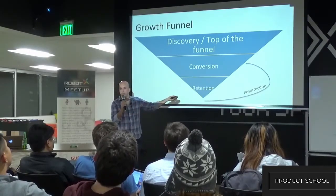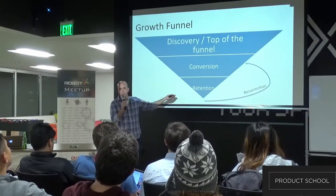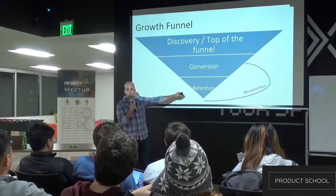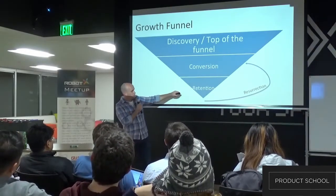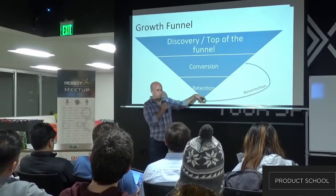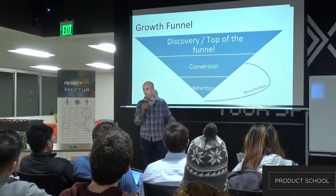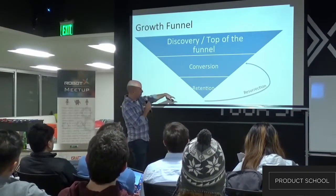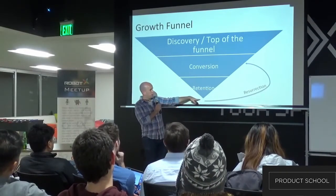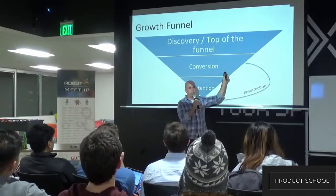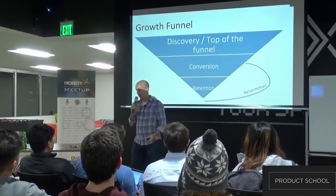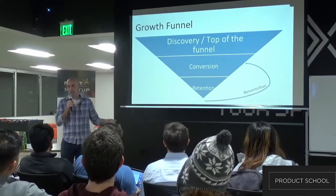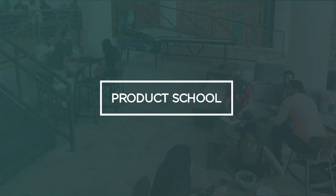And then you have retention, which means you need to keep the users using the product. Those users that fall off this funnel and do not retain — you want to resurrect them. And when you resurrect them, you want to convert them again, because sometimes they're not using the product. So let's say somebody didn't use eBay or Amazon for a long time, and you managed to bring them back to Amazon — you still need to convert them. So when you understand this funnel, you can start thinking about tactics and products to grow each part of it.